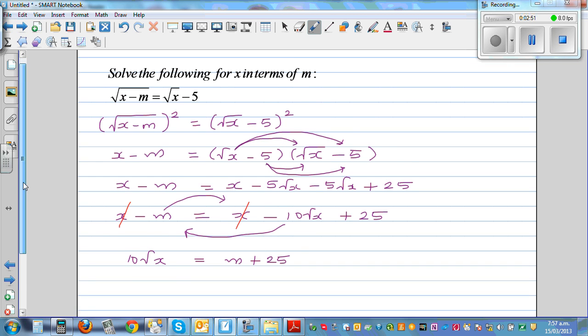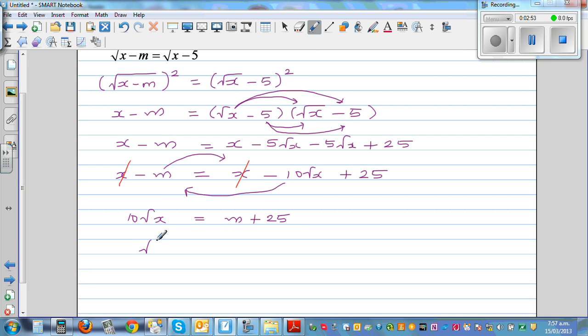Now I'm going to divide both sides by 10. So this is √x = (m + 25)/10.